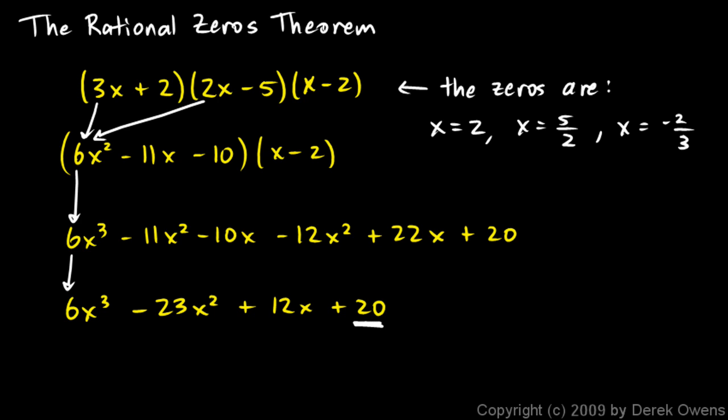Now, look at this 20 down here. Where did the 20 come from? It came from right there. Where did that 20 come from? It came from this -10 and this -2 over here. And where did those come from? This 2 came from right there, and this 10 came from that 5 and that 2.